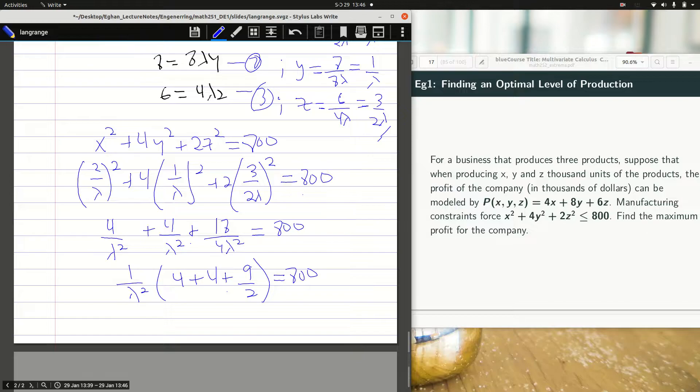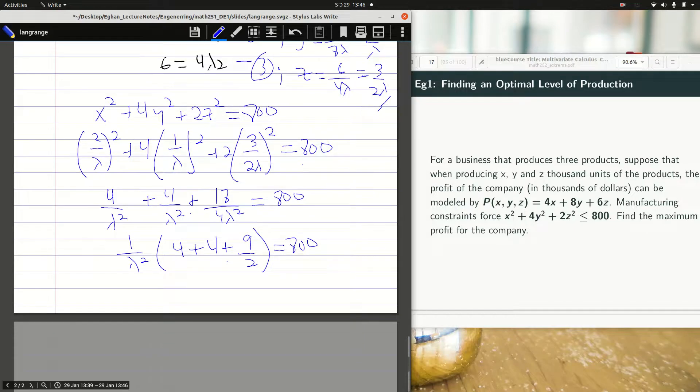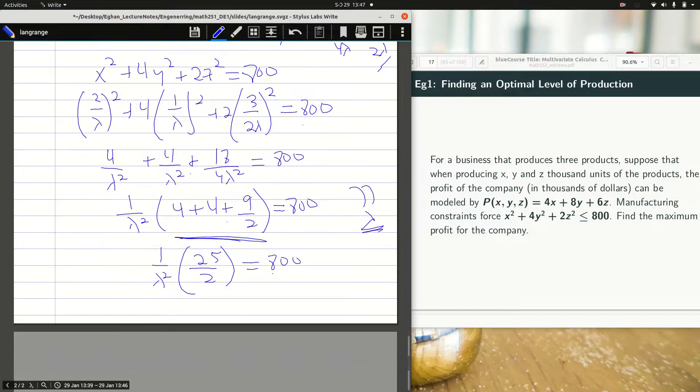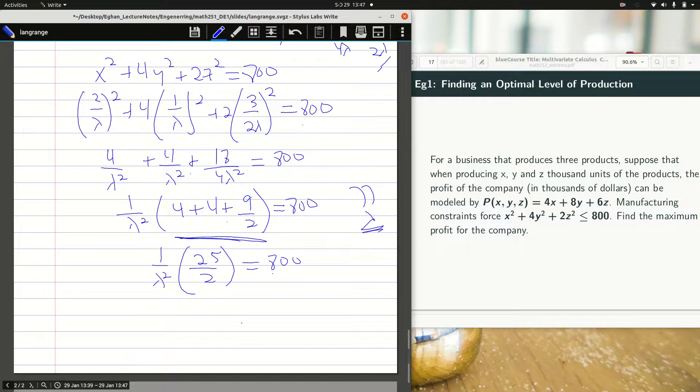We have our calculators to find what this guy would be, and then that would be 25 over 2 times 1 over lambda all squared is equal to 800. Don't forget we are looking for lambda. What I can do here is to have lambda squared being equal to 1 over 800 times 25 over 2, which is the same as 25 over 1600.